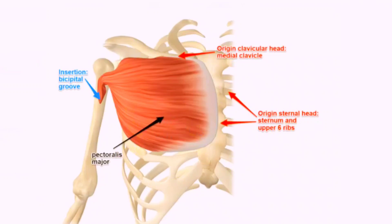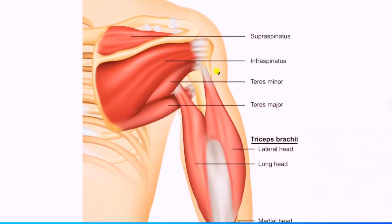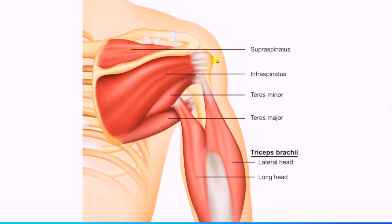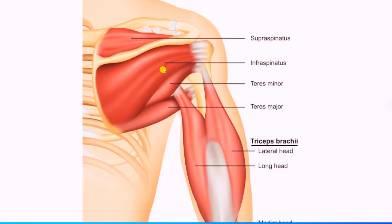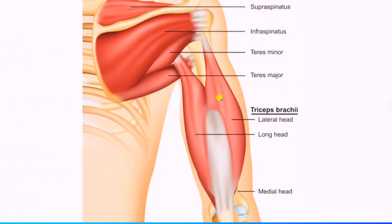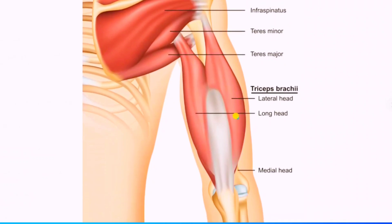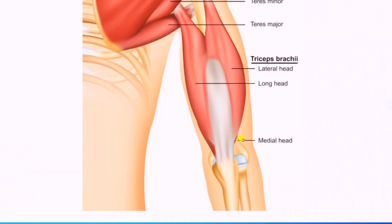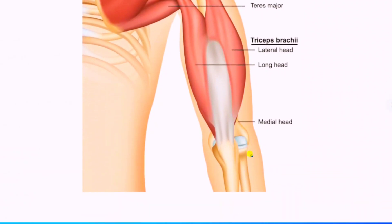Behind pectoralis major we have pectoralis minor. Looking at the muscles of the upper arm, we have supraspinatus, infraspinatus, teres minor, teres major, and triceps brachii with its lateral head, long head, and medial head.